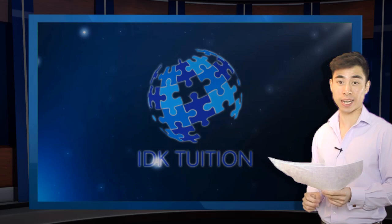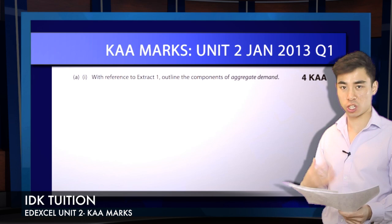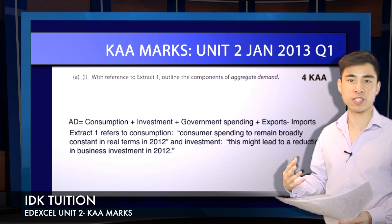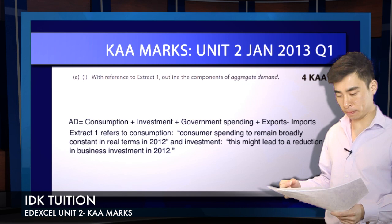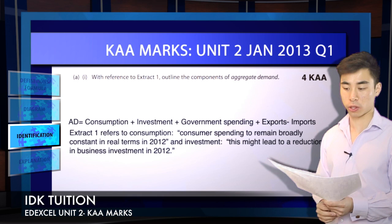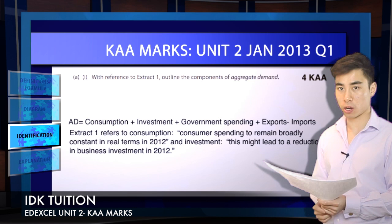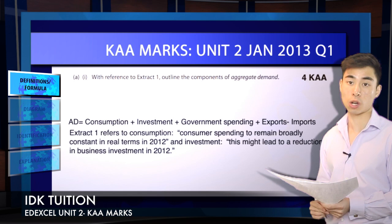Starting with question A(i): six marks, standalone KAA question. It's literally just regurgitation of knowledge. The first question on your Unit 2 paper tends to be of this nature, but it will be the only one and there aren't too many marks on offer. The question says 'with reference to extract 1, outline the components of aggregate demand.' You need to make explicit references to your extract and simply list out the different components of aggregate demand.